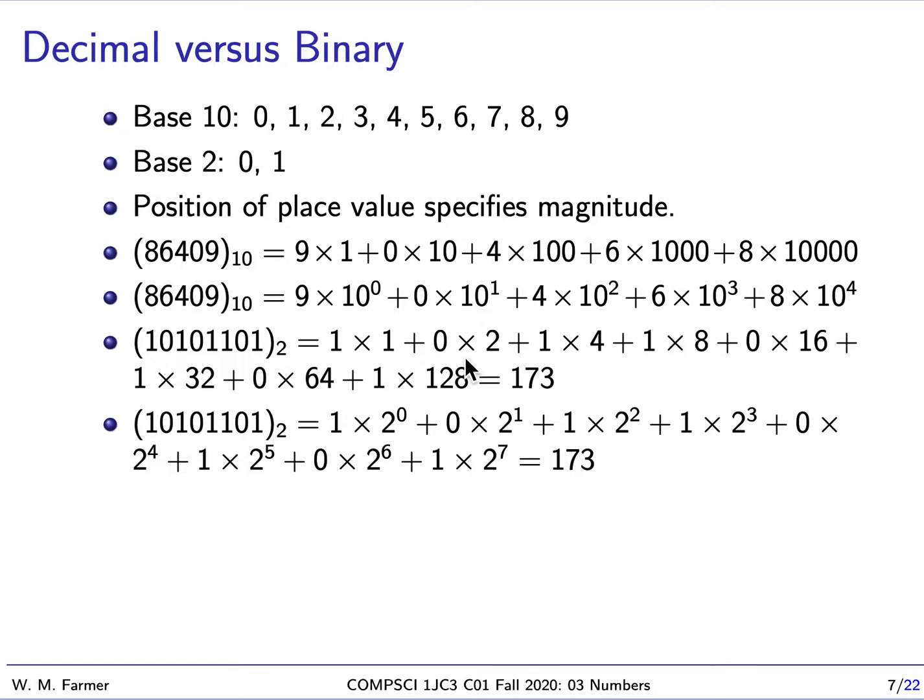We're going to start by looking at the difference between decimal numerals and binary numerals. A decimal numeral is a numeral built up according to the Hindu-Arabic system using ten digits. And in base two, we build up numerals in the same way, but we only use two digits.